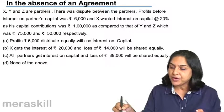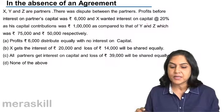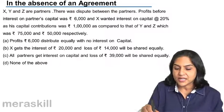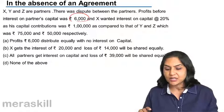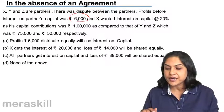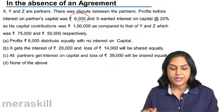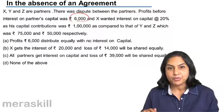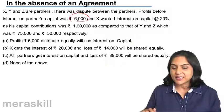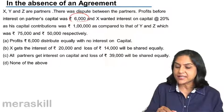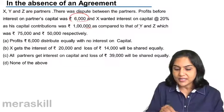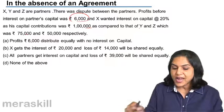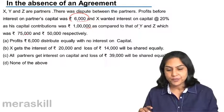Profits before interest on partner's capital was 6,000. The profit was 6,000 and X wanted interest on capital at the rate of 20%, since his capital contribution was the highest. X's capital contribution is 1 lakh, Y's is 75,000 and Z's is 50,000.